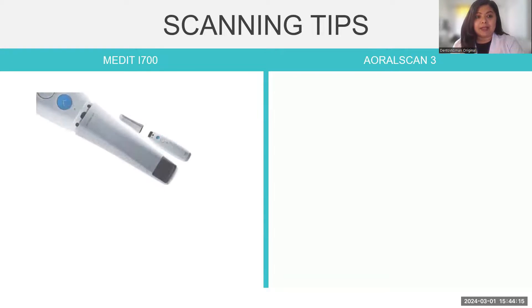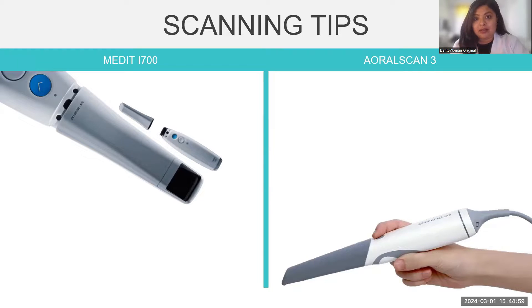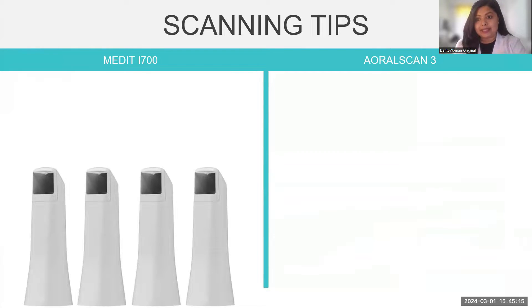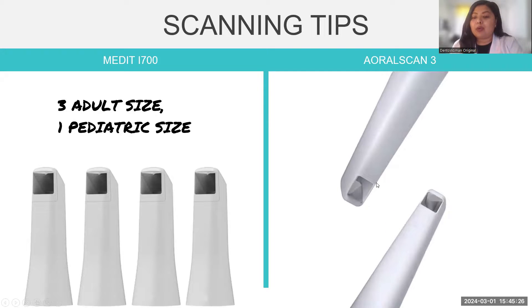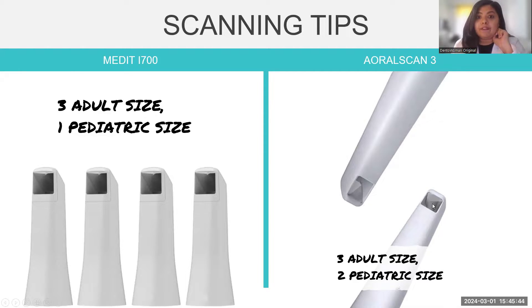For scanning tips, the Medit i700 has a 180-degree reversible tip — it can be fitted either way — whereas the Oral Scan 3 tip has a particular direction in which it must be fitted. I personally didn't find this a big difference while scanning; you develop your own method. For additional tips, Medit i700 comes with four extras including one smaller pediatric tip, while Oral Scan 3 includes five extras — three for adults and two for pediatric patients. The smaller tips are very useful for restricted mouth opening cases, female patients with limited opening, or scanning second and third molars.